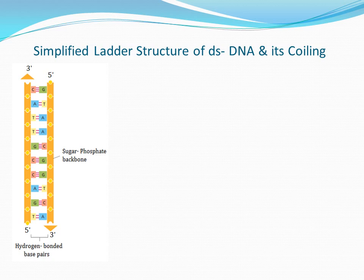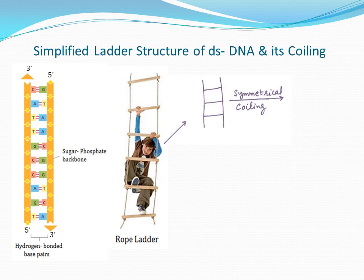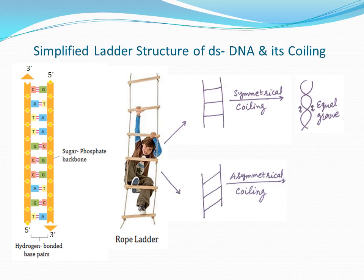We will compare this double-stranded DNA with a rope ladder. Visualize that you are holding a small rope ladder in your hands and twisting it clockwise or anticlockwise. If the ladder remains straight during twisting, it results in a symmetrical coil with equal-sized grooves on its sides. Likewise, the DNA duplex gets tilted during coiling, due to which we observe major and minor grooves in its structure.